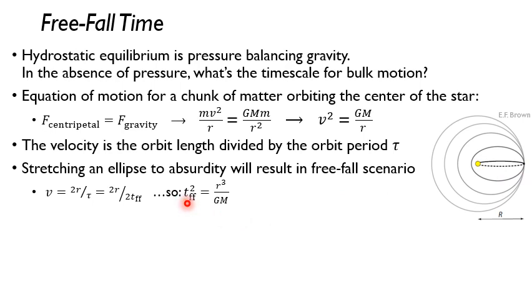The freefall time squared is equal to the radius cubed divided by Newton's gravitation constant times the mass that is encompassed within this radius r.